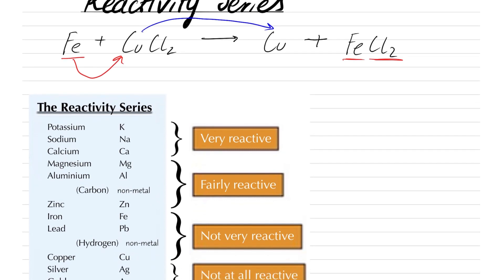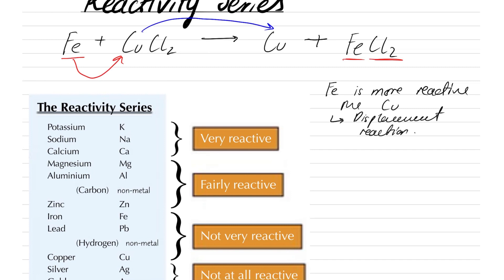Now why does this reaction happen? Well, this reaction happens because the iron is more reactive than the copper. And this is a displacement reaction.